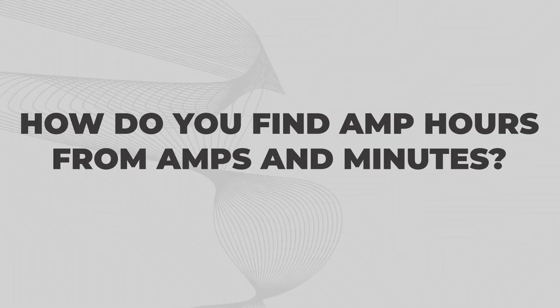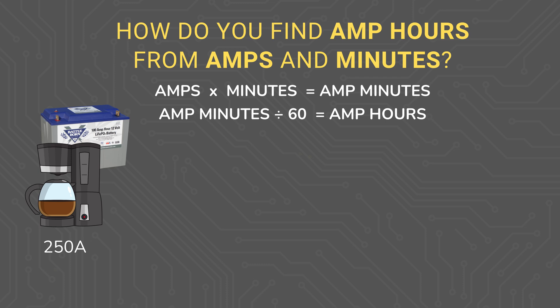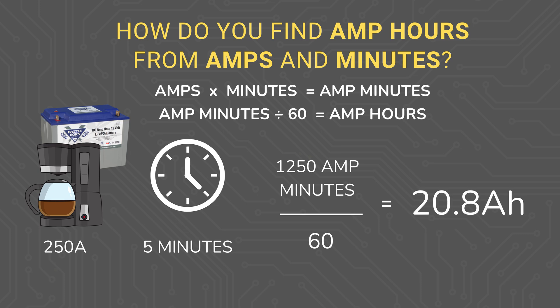How do you find amp hours from amps and minutes? Similar to finding watt hours from watts and minutes, finding amp hours from amps and minutes is multiplying the amps by minutes and then dividing by 60. For example, if we have a coffee maker pulling 250 amps from a 12 volt battery bank during its brew time of five minutes, we can take 250 amps times five minutes, which gives us 1250 amp minutes, and then divide that by 60, which gives us 20.8 amp hours pulled from the 12 volt battery bank.